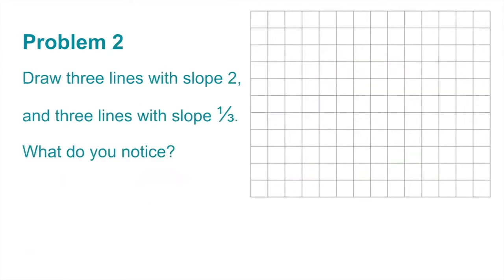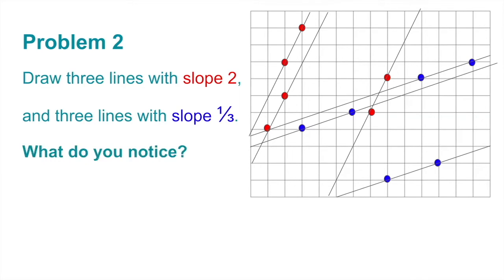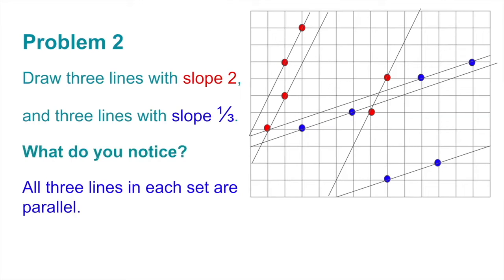Number 2. Draw three lines with slope two and three lines with slope one-third. What do you notice? For slope two, I start with a point, rise up two, run over one — and repeat for each of the three lines. For slope one-third, I rise up one and run over three — and repeat for three lines. What do you notice about these lines? All three lines in each set are parallel.